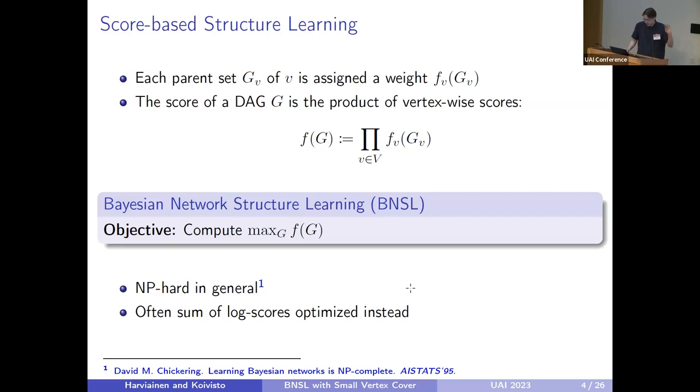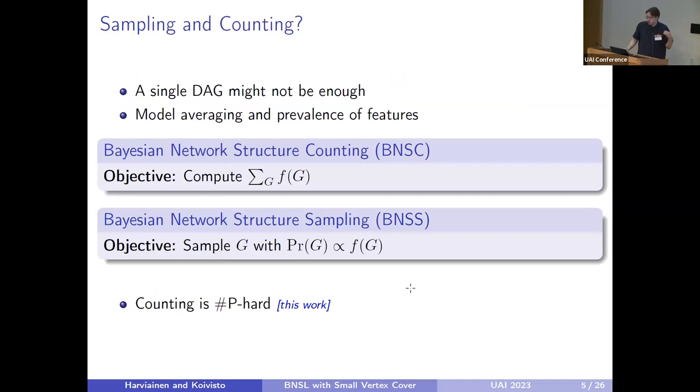Typically we optimize the sum of logarithmic scores instead, which is equivalent to this problem. But because we are also looking into sampling and counting Bayesian network structures, we use this product form, which is more sensible in this case.